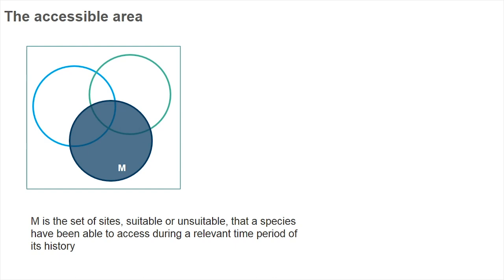But what exactly is the accessible area M? It's a hypothesis and it consists of the set of sites that have either suitable or unsuitable conditions, but in which the species have been able to access those sites during a relevant time period of its evolutionary history. This area is tied to the dispersal abilities of the species but also to its diversification or its evolutionary history.